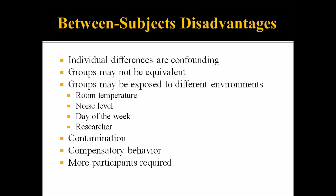Looking at some of the disadvantages of between-subjects designs: individual differences are confounding, and the groups may not be equivalent. The groups may also be exposed to different environments — for example, the temperature of the room, the noise level, the day of the week, or the time of day. The individual researcher making observations could be different, or the same researcher could simply be in a different mood. You also have the risk of contamination, which is a threat to internal validity — that's where participants from one group communicate with the other group, discover the other group's treatment, and begin to use that knowledge during the experiment, which changes the outcome.